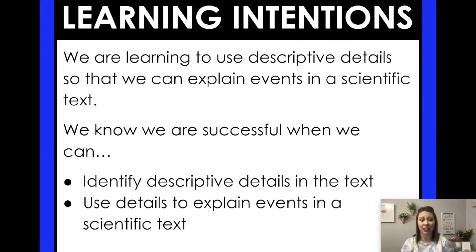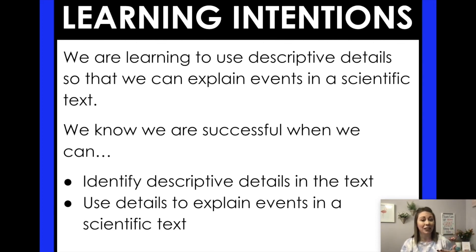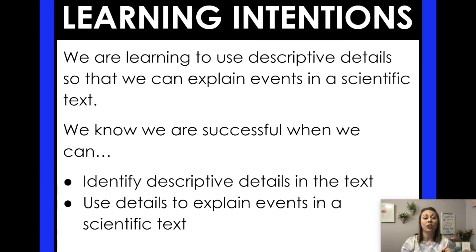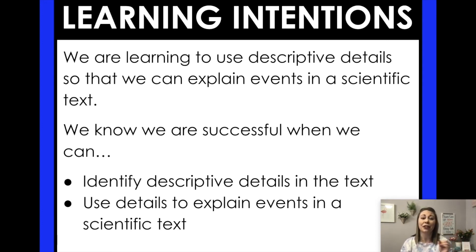Back to our learning intentions for today. We were learning to use descriptive details so we can explain events in a scientific text. We want to be able to use those details to visualize what is happening. We know we are successful: we identified descriptive details in the text by putting them in the table, and we used those details to visualize and explain exactly how bad this earthquake is — including taking text evidence to explain what was happening in our stop and think questions.